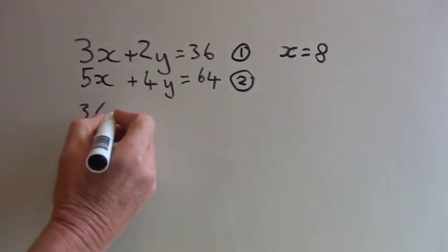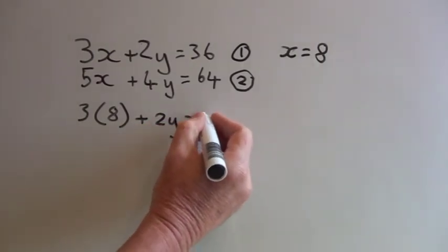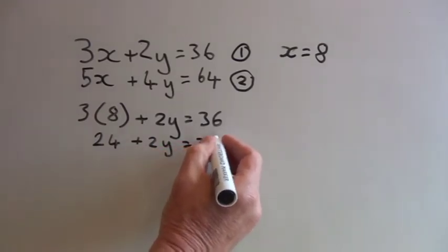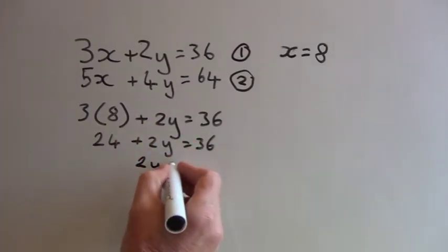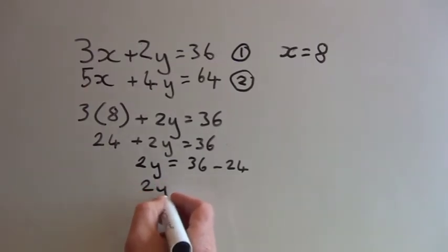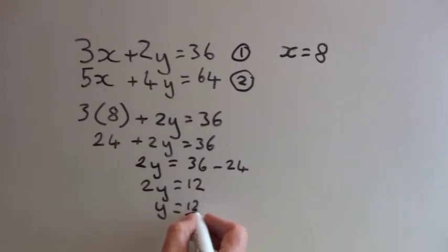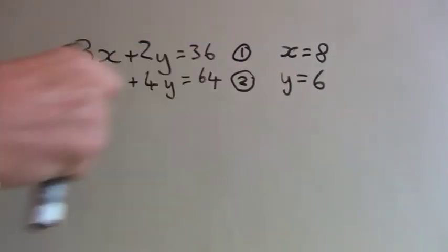So if I say 3 times 8 plus 2y equals 36. So 3 times 8 is 24, plus 2y equals 36. I subtract 24 from each side, so that gives me 2y equals 36 minus 24. Therefore 2y equals 12, so y equals 12 divided by 2, which equals 6. So y equals 6.